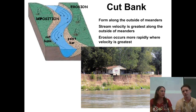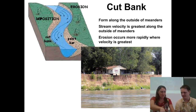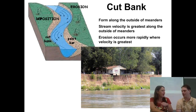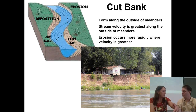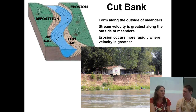Think about that game called Crack the Whip. If you have one person standing in the middle and a row of people holding hands, the person in the middle can just spin on that spot, but the people on the outside have to go really, really fast. It's the same idea here — the water on the outside of the curve has to go really fast compared to water on the inside. Water going faster means greater erosional power — more force behind it, so it can erode away the outside edge and cut a bank.